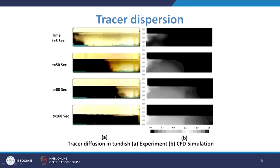One example of tracer dispersion shows the experiment where flow with water is ongoing and then the tracer is started. After some time with continuous tracer input, it can be seen that in about 168 seconds the tracer traverses the tundish. This can also be understood and validated with the help of CFD simulation, showing how the tracer progresses and how its concentration changes over time.